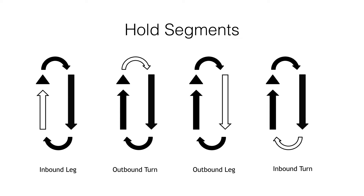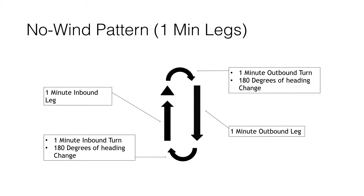The no-wind pattern is sometimes called a one-minute or four-minute pattern because each of the four legs is one minute. We have a holding fix, an outbound turn, an inbound turn, and two straight legs. The turns look short on a chart, but we're doing two 180-degree turns, each taking one minute — so half of our four-minute pattern is spent turning. Once wind gets involved, it gets different. With just 15 knots of wind and no correction over four minutes, we can be an entire mile off course. In instrument conditions with 30 knots, that's two miles off course.